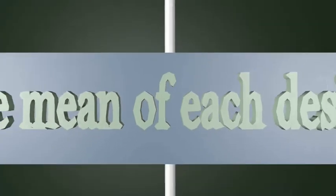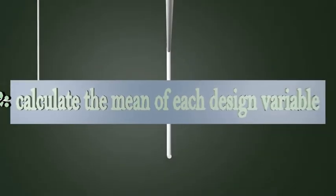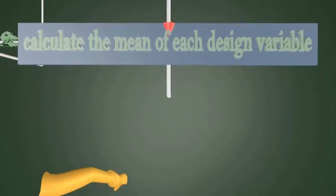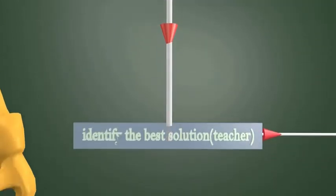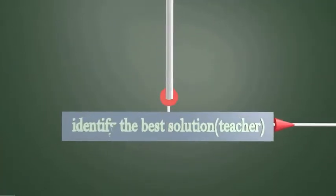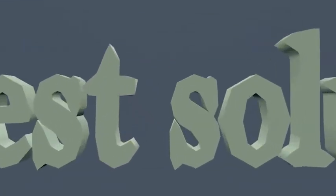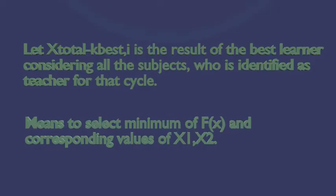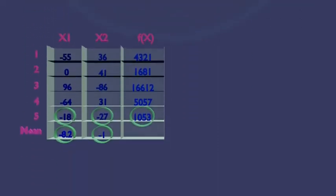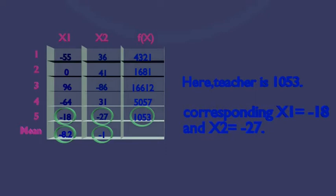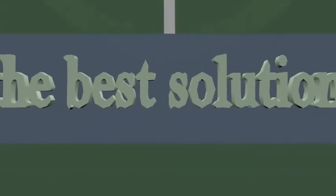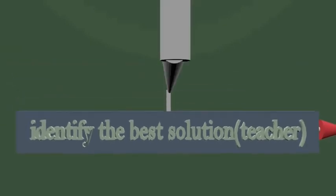Now we are moving to the third step: identify the best solution or the best teacher. The task is to identify the best teacher, meaning select the minimum of f(x) and corresponding values of x1 and x2. Here, the minimum is 1053 and the corresponding values are minus 18 and minus 27. This is our third step, and now we are moving to the next step.